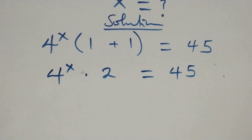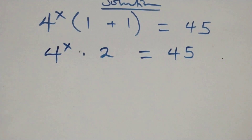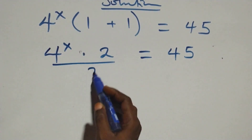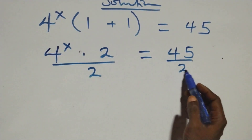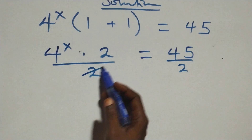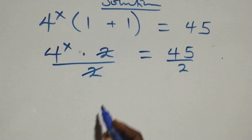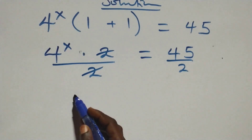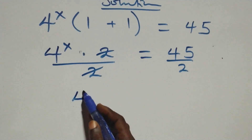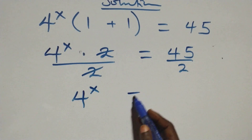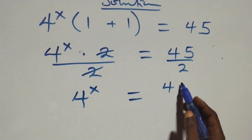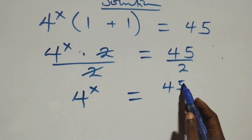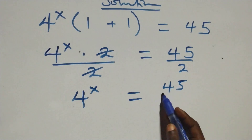The next step is to divide both sides by 2. The 2's cancel each other, and we are left with 4 raised to the power x equals 45 over 2.